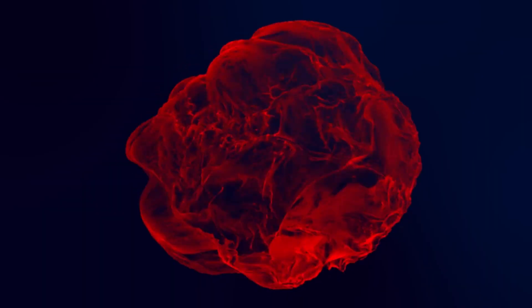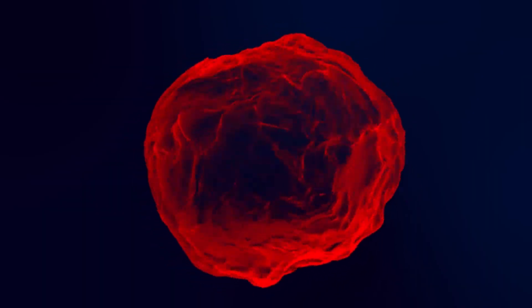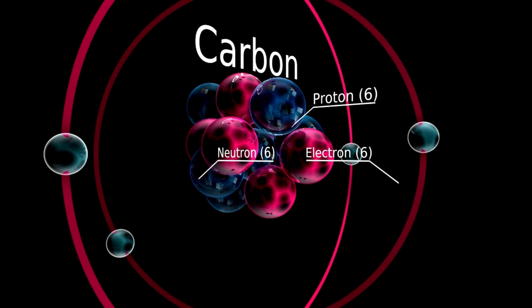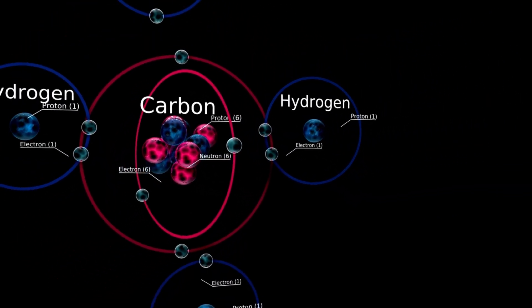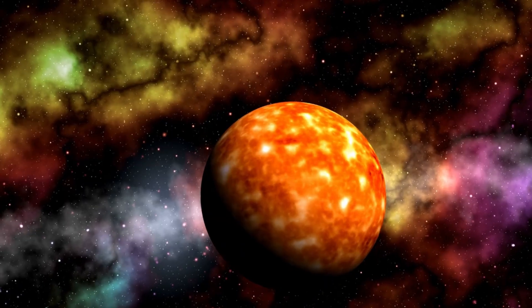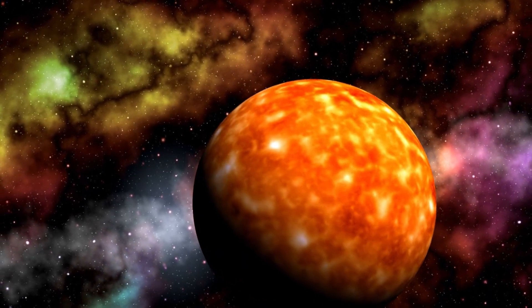Although the Sun is smaller than Betelgeuse, the latter emits less energy per unit area due to its lower temperature. Betelgeuse has been relatively stable for many years, despite being a pulsating giant. However, it has recently shifted from a calm state to a more unstable one, which is alarming to astronomers.